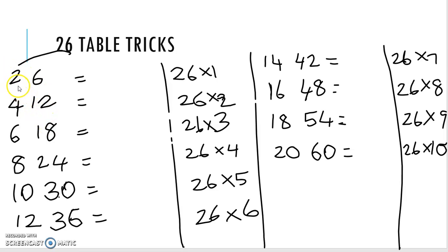Let's look at 2 table. 2×1 is 2, 2×2 is 4, 2×3 is 6, 2×4 is 8, 2×5 is 10, 2×6 is 12, 2×7 is 14, 2×8 is 16, 2×9 is 18, 2×10 is 20.